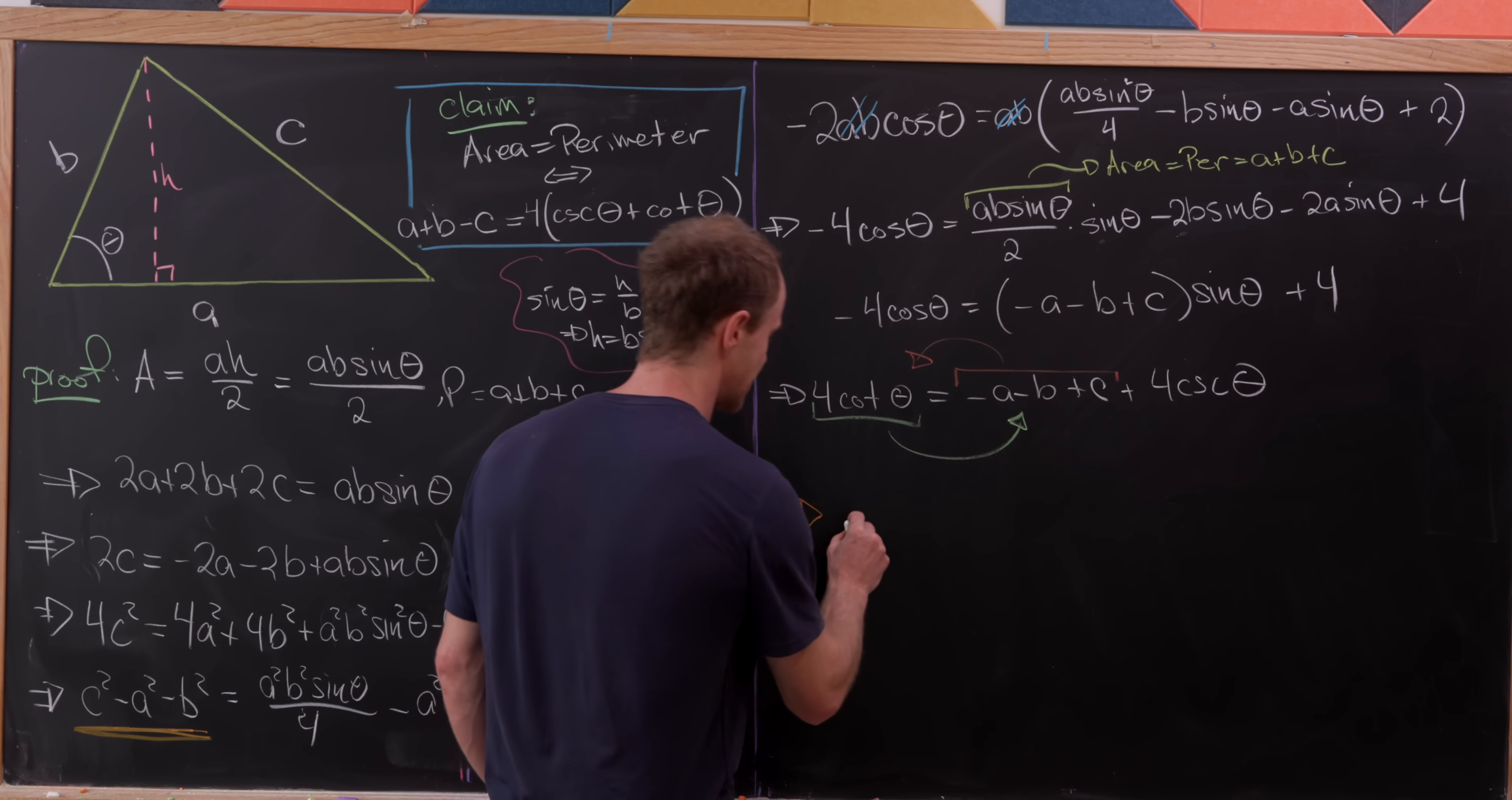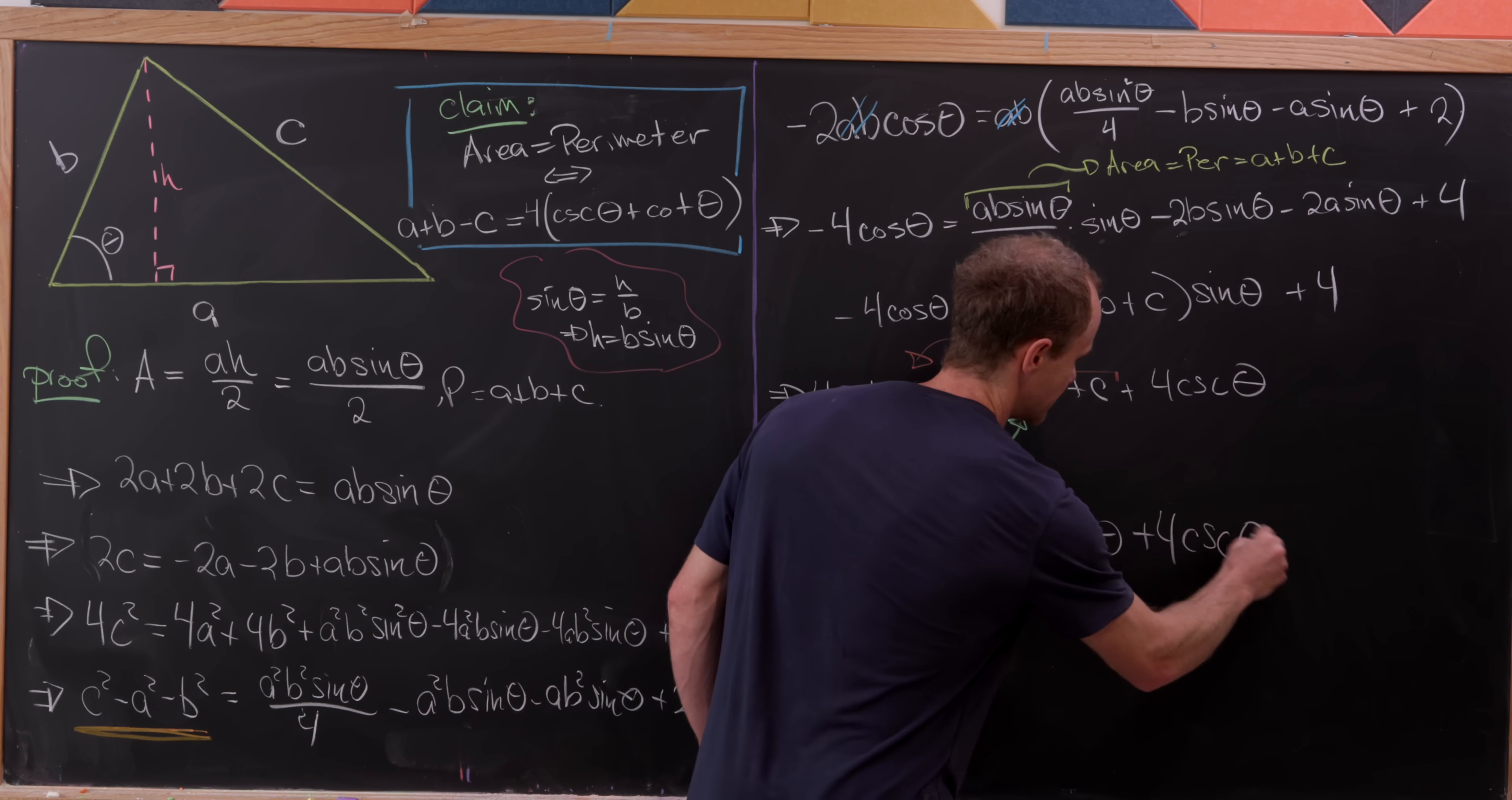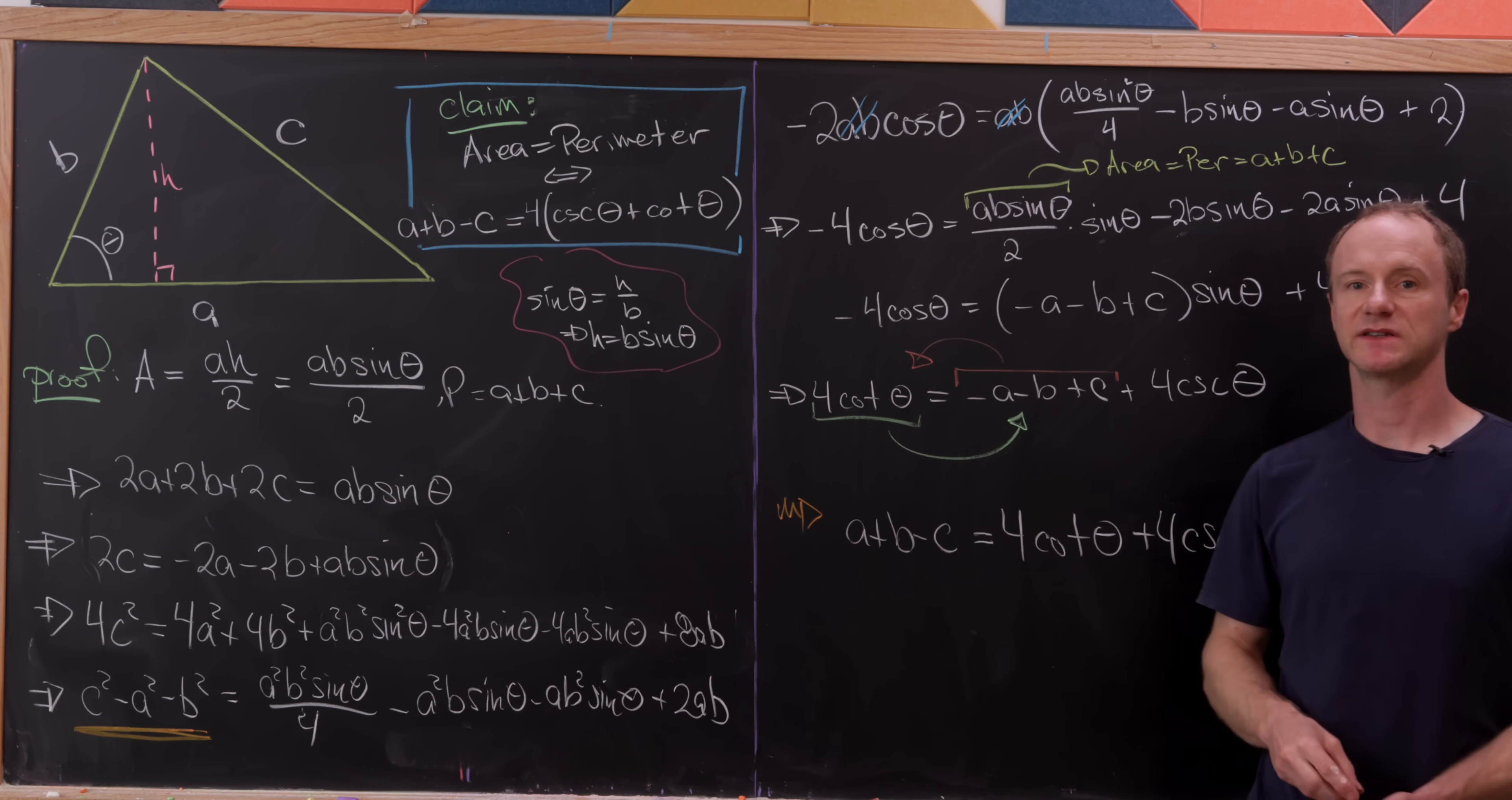And in the end, that's going to leave us with a plus b minus c equals 4 times cotangent theta plus 4 times cosecant theta. But observe that that's exactly where we wanted to end up, and that's a good place to stop.